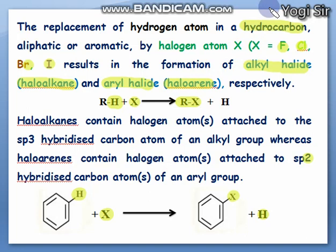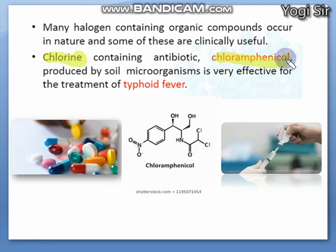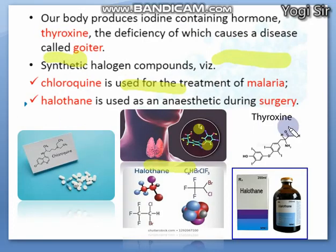Next, let's see what are the general uses of these compounds. Most of these compounds are clinically useful — most of them are utilized in medicines. For example, one compound is the chlorine-containing antibiotic chloramphenicol, which is a medicine used in typhoid fever. Chloramphenicol contains chlorine atoms and is one of the important medicines used in typhoid fever, one of the infectious diseases.